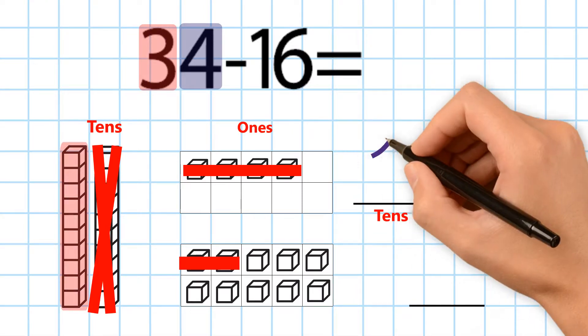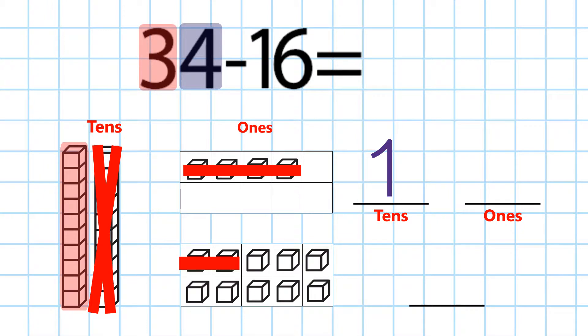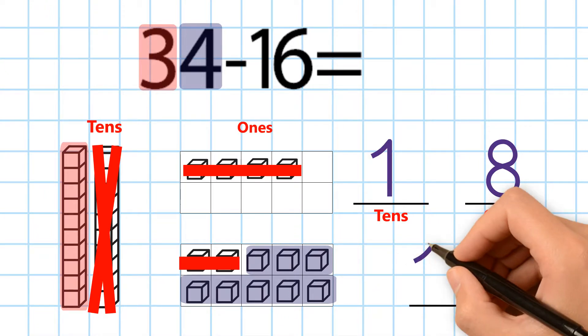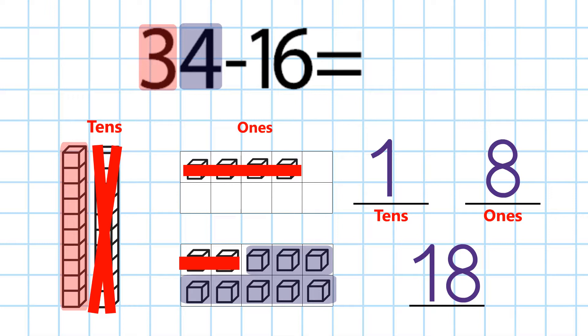Now we have 1 ten and 8 ones left, which means that 34 minus 16 is equal to 18.